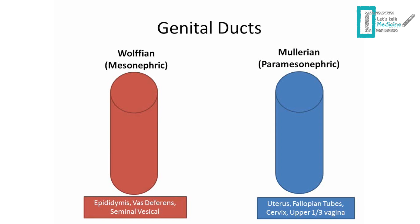Now talking about the genital ducts in detail. We have two ducts: the mesonephric duct and the paramesonephric duct, also known as the Wolffian duct and the Müllerian duct. I suggest you memorize both names. I like to use Wolffian and Müllerian because Wolffian is associated with the male genital tract — wolf and male — and Müllerian is associated with the female genital tract.